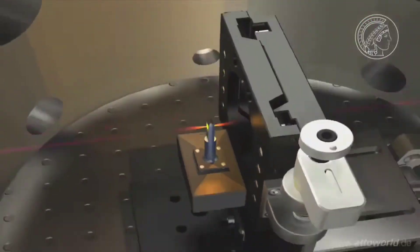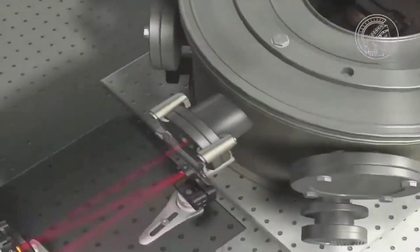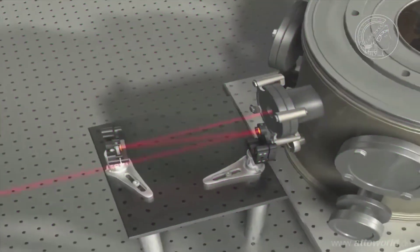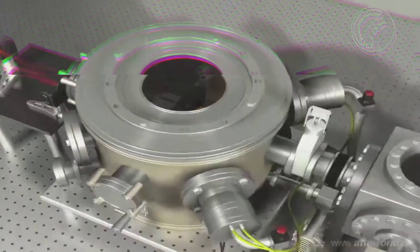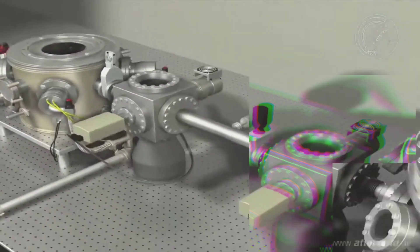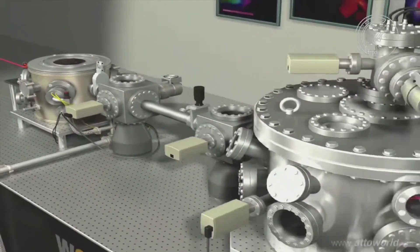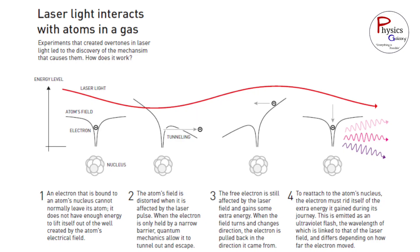Laser light interacts with atoms in a gas. Experiments that created overtones in laser light led to the discovery of the mechanism that causes them. How does it work? Now look into the image presented on the screen.